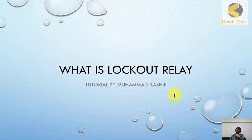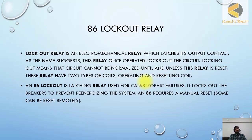Let us discuss another main component of the production system: production drawings and lockout relays. Lockout relays are shown by code 86. A lockout relay is an electromechanical relay which latches its output contact. As the name suggests, this relay once operated locks out the circuit — meaning the circuit cannot normalize unless this relay is reset.